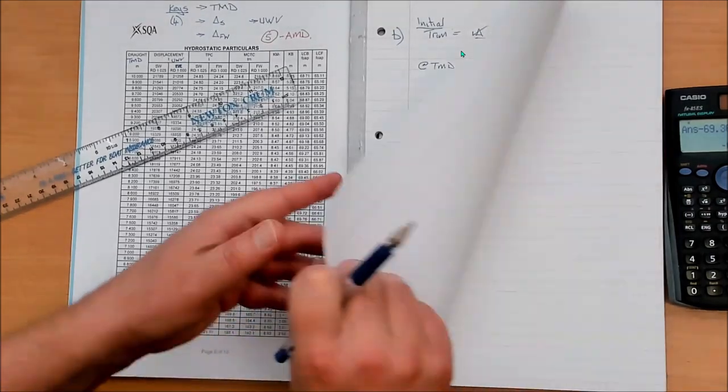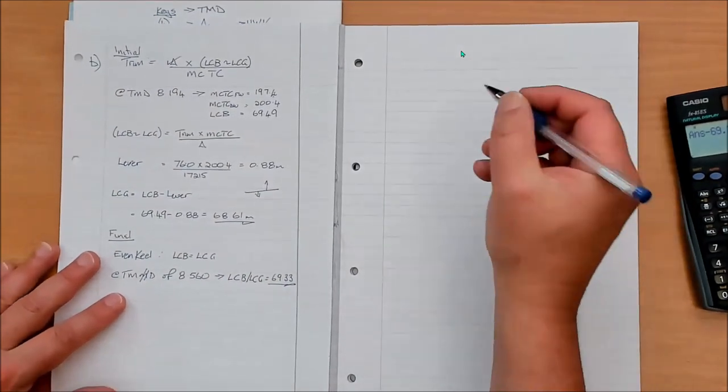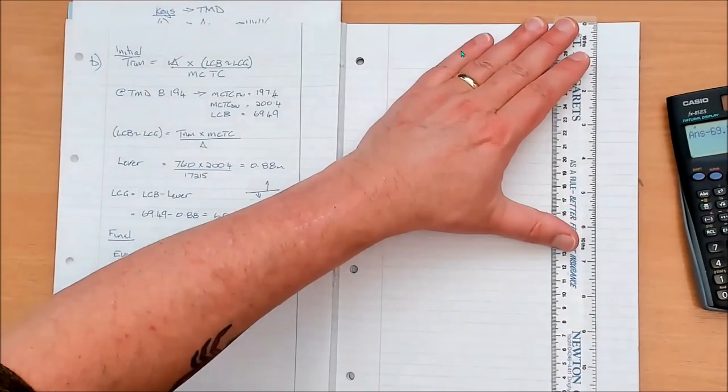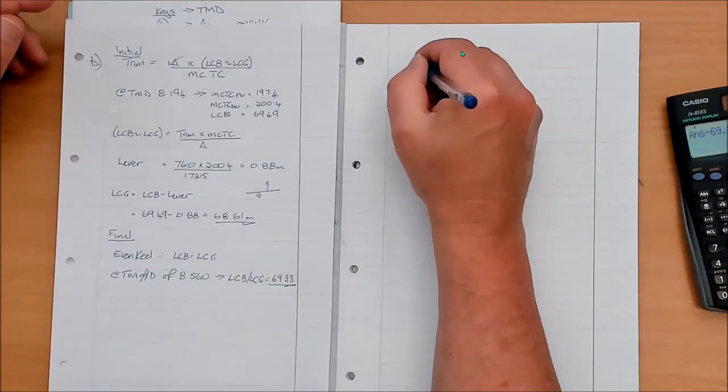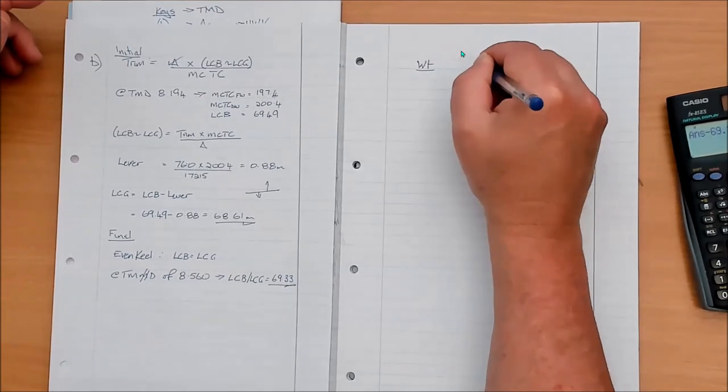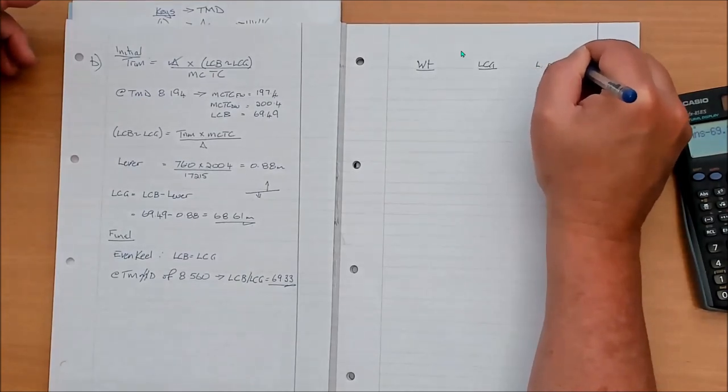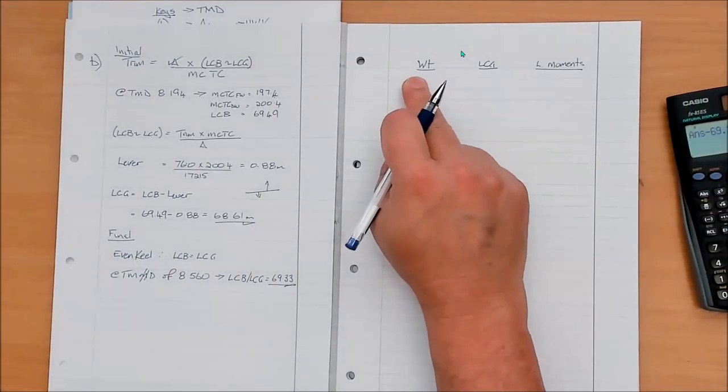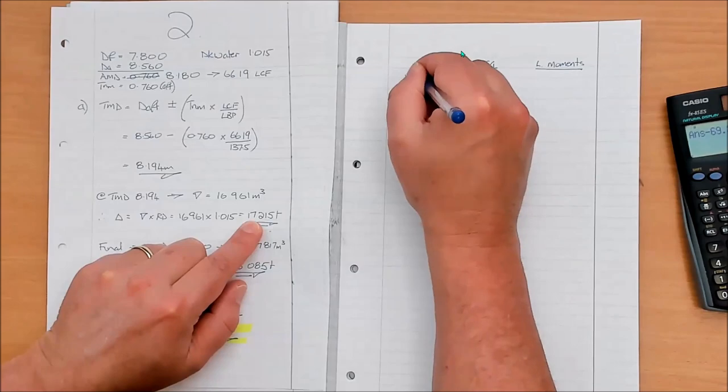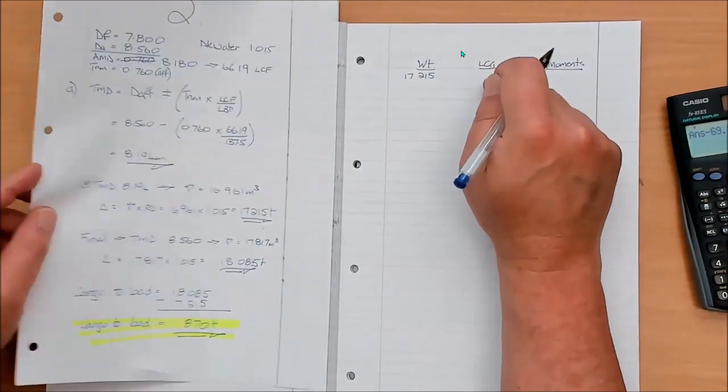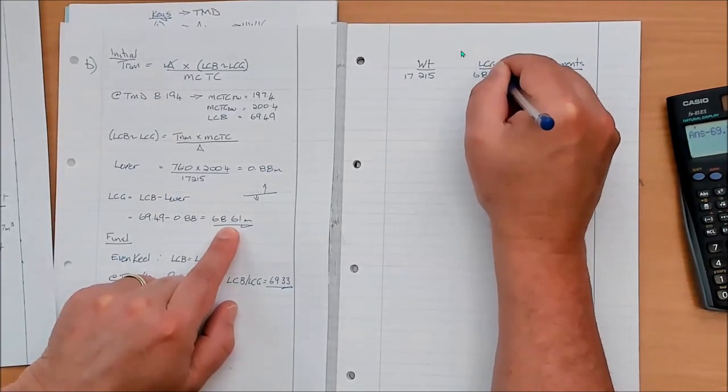Right, so three columns. Okay, let me just rule that outside section of the page down so I don't get too comfy. Three columns: Weight, LCG, and longitudinal moments. Initial displacement, fine, we've got that in Part A, ready to go. 17,215. Initial LCG, 68.61. Fine, then what happens?